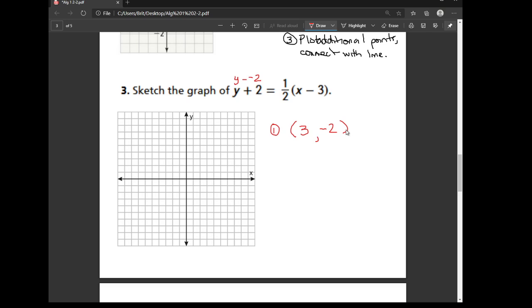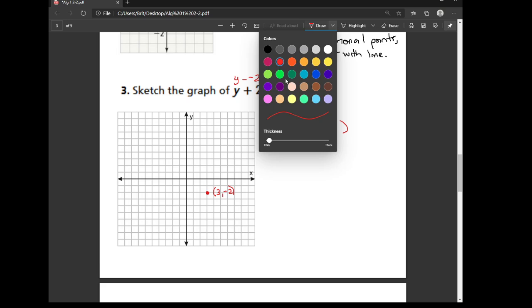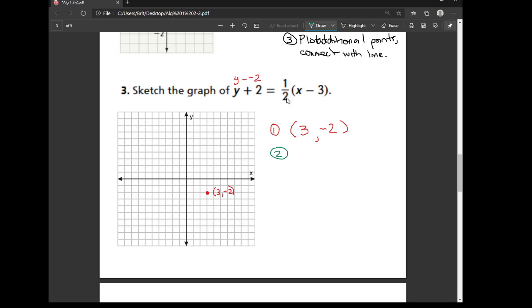So I'm going to plot that 3 negative 2. So I go to the right by 3 and down by 2. The second step says to use your slope, in this case our slope is 1 half, to mark an additional point. Alright, so this is saying from this point I rise by 1 and I run by 2. So this point is at 1, 2, 3, 4, 5, negative 1.